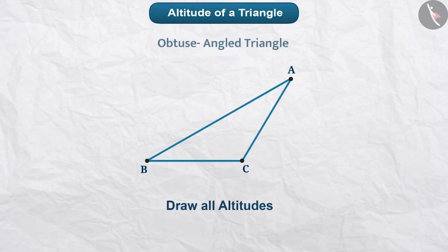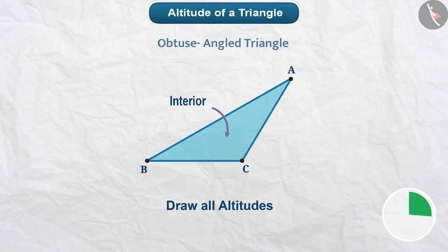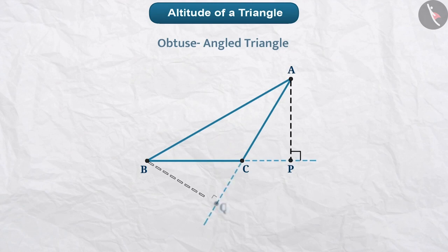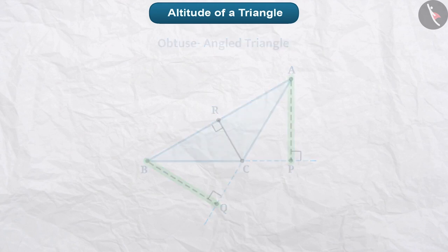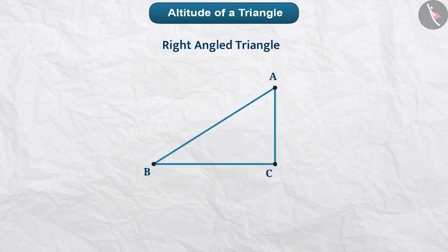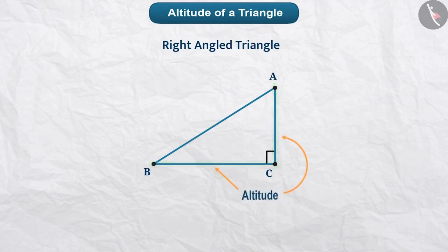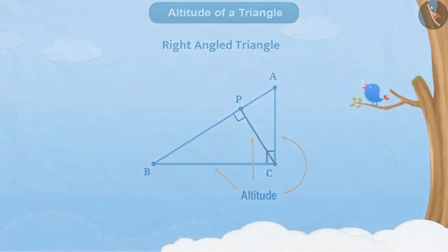Now you can take a paper and draw an obtuse angled triangle on it. Draw all the altitudes in it — do you get all altitudes in the interior of the triangle? Find out by pausing the video. In an obtuse angled triangle, the altitudes can also be in the exterior of the triangle. Similarly, in a right angled triangle, its two sides are perpendicular to each other, which means both those sides are also the altitudes of the triangle.